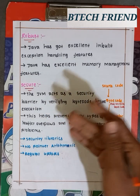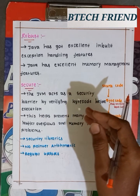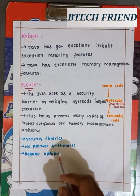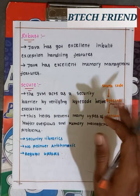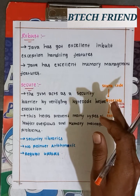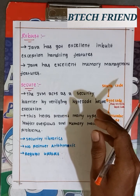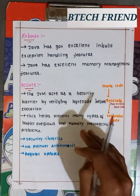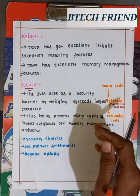In Java, we have security libraries. There are no pointers at all. In C++, we have pointers, but Java does not use pointers at all.